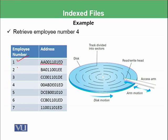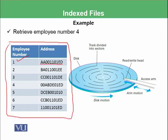So whenever we want to retrieve employee record 1, we will look into this index table and go directly to that particular location and start picking the record from there. Similarly, if you want to retrieve employee number 4, you will look into the table, find that address, and go directly to that location. This particular table we have created is basically called the index, which tells us where each record is saved on the drive.